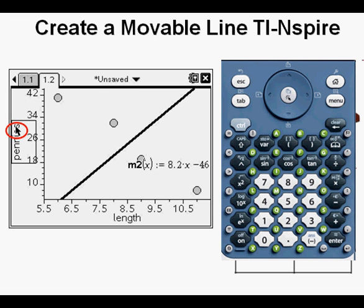To change the movable line to be a line of best fit, we're going to need to rotate the line and move it up and down until it has a good trend line for our points.